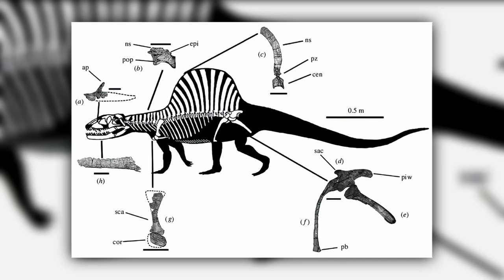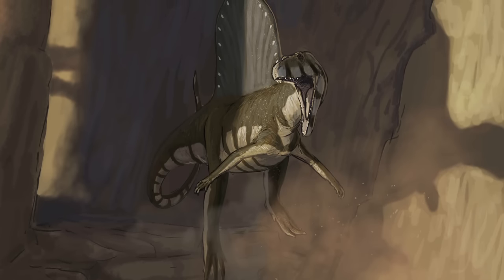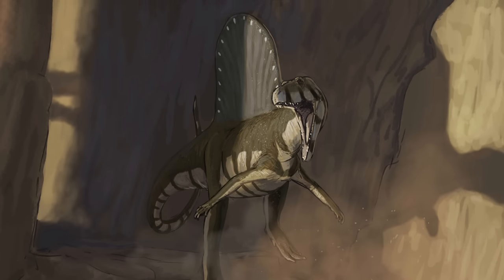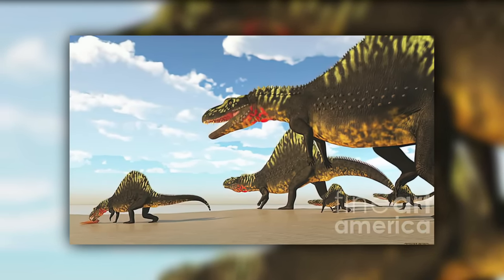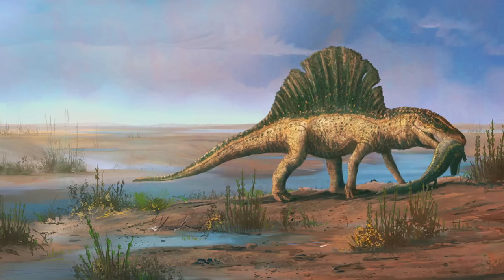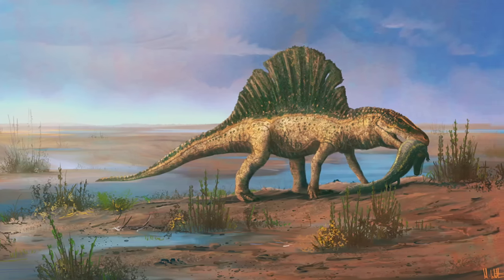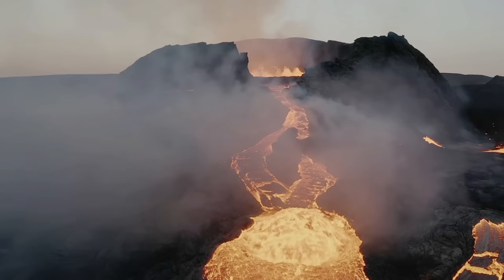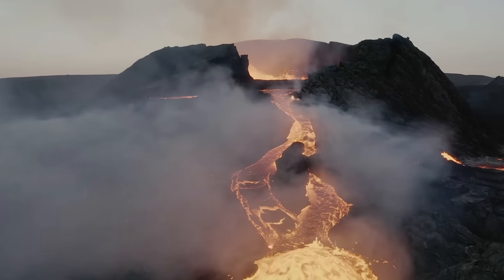Arizonasaurus was a large reptile, with some species reaching lengths of up to 4 meters, around 13 feet. It had a long and slender body with powerful legs. It was a carnivore, and its skull was equipped with sharp teeth adapted for capturing and consuming prey. This reptile was a top predator in its ecosystem, likely preying on other reptiles and early mammals. Like many other late Triassic reptiles, Arizonasaurus went extinct at the end of the Triassic period, as the early Jurassic saw the rise of different groups of predators and herbivores.